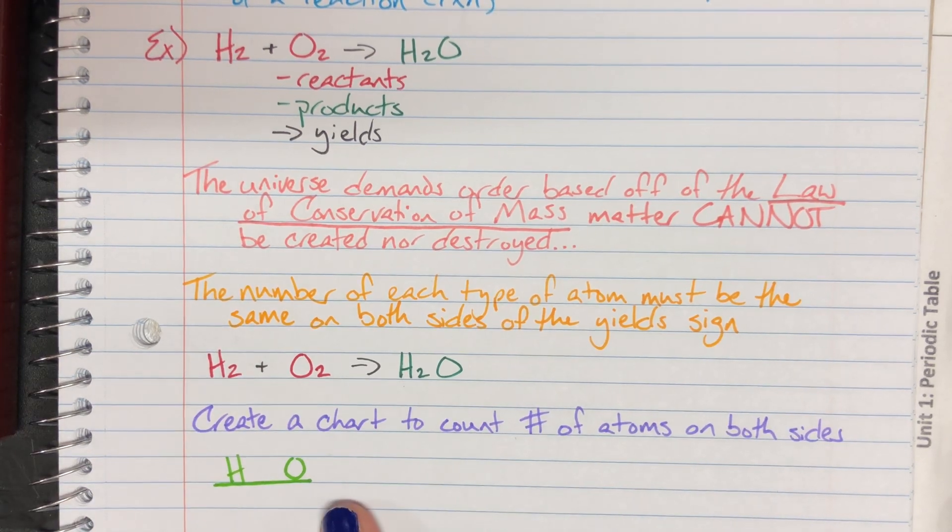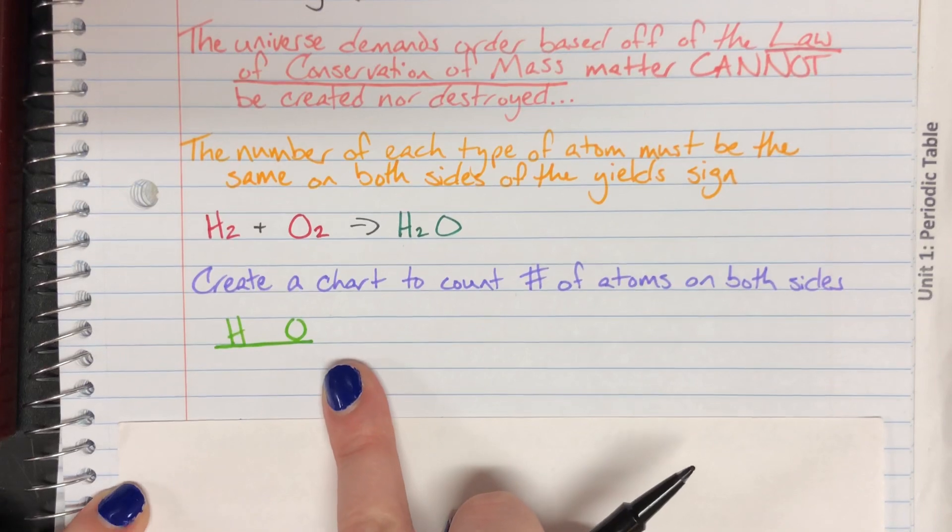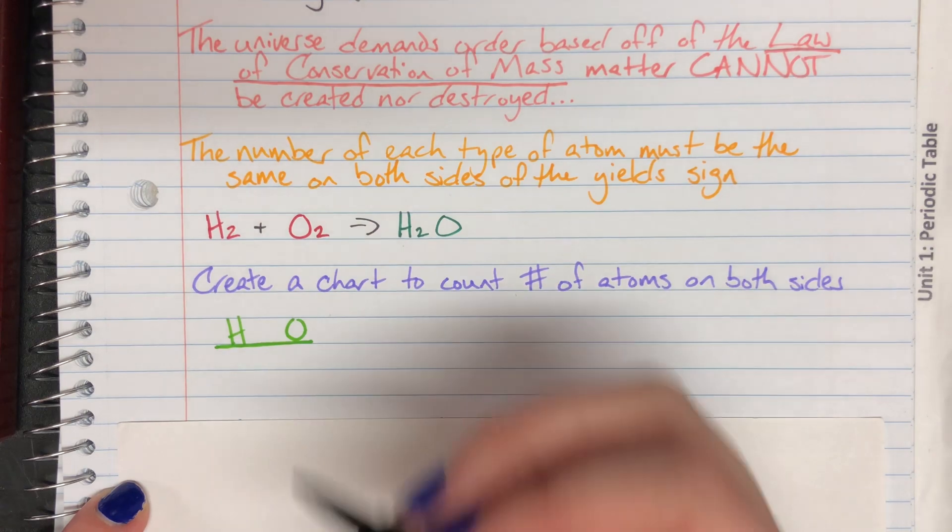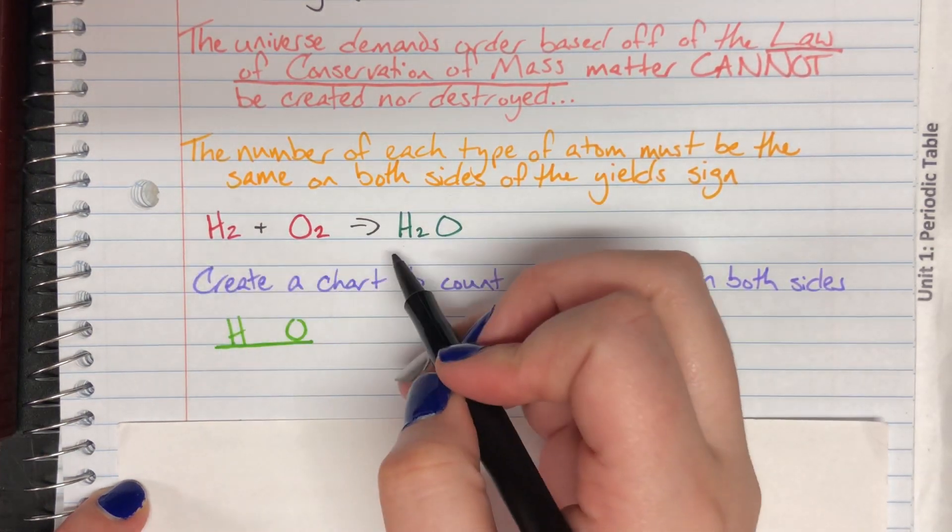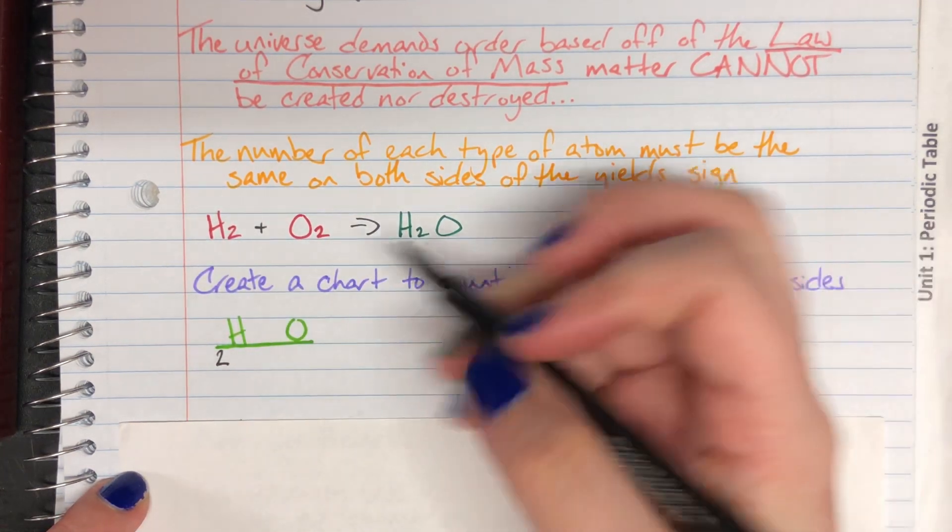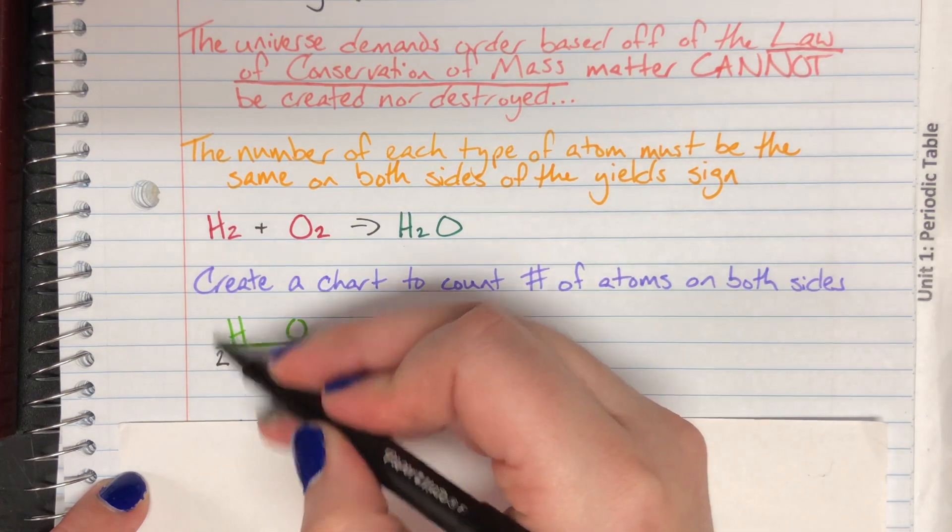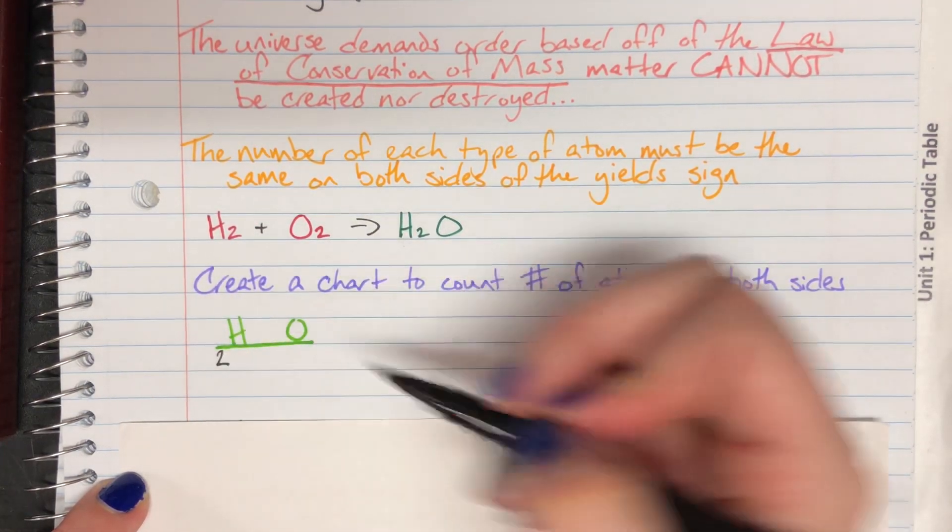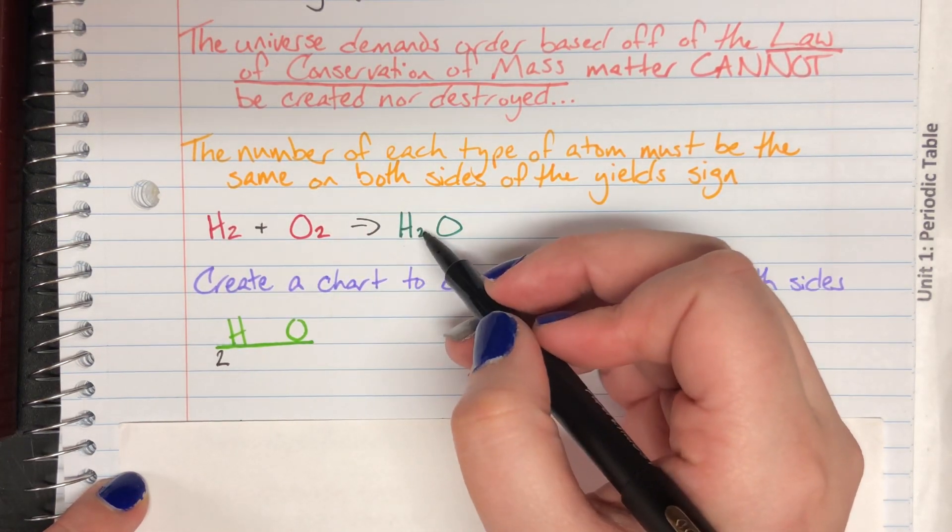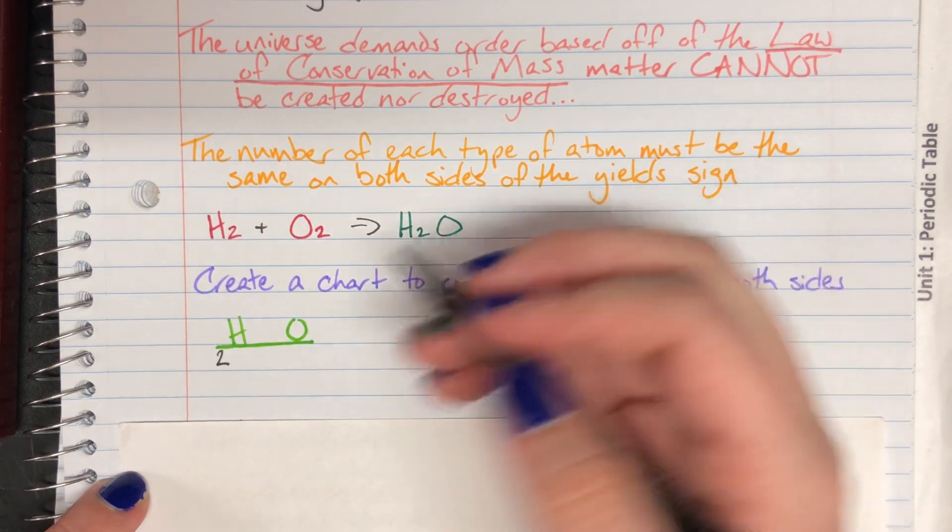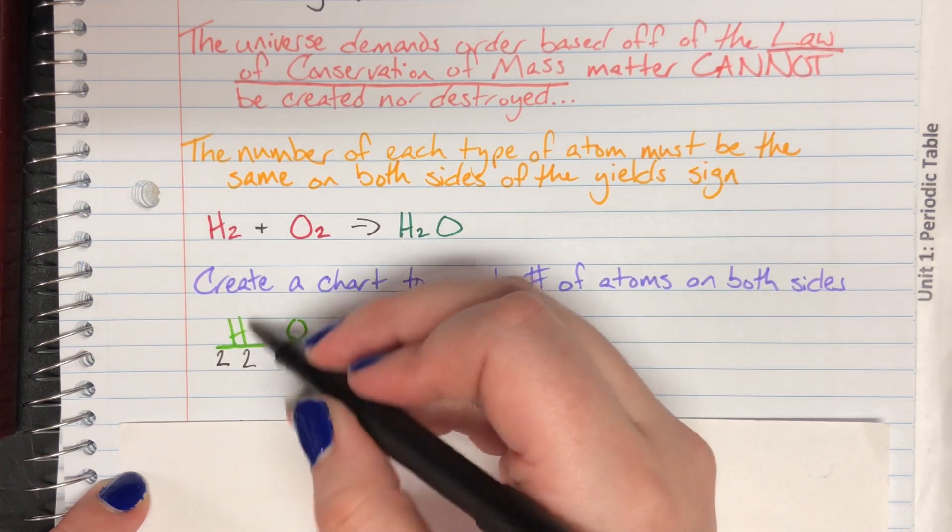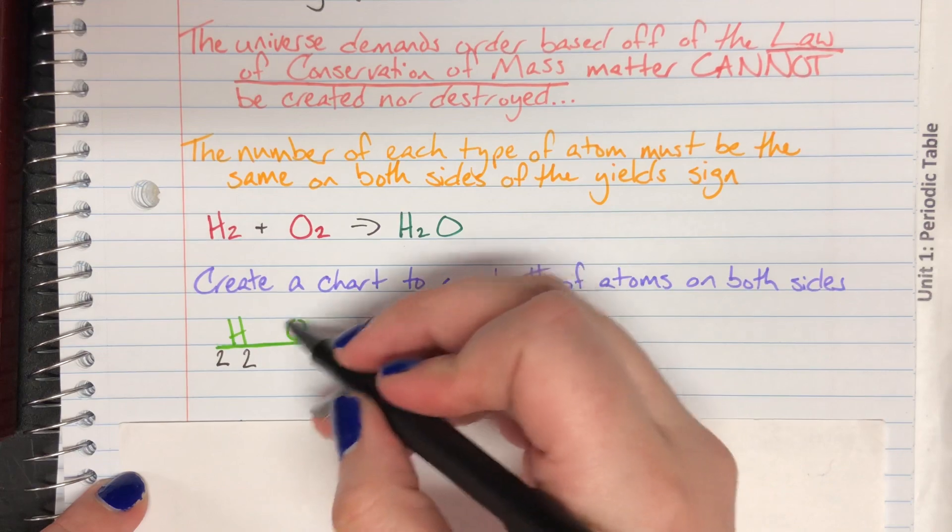The chart that I like to use has my elements listed out - I have hydrogen and oxygen here - and I create short columns underneath. On the left hand side of the arrow I have two hydrogens because of that subscript of two, so underneath hydrogen on my chart on the left hand side I'll put a two. I'll count how many hydrogens I have on the right hand side of that arrow. On the right hand side, hydrogen also has two, so I'll write that on the right hand side underneath hydrogen.